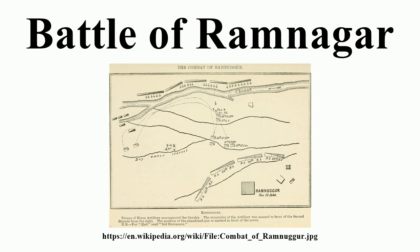Order of Battle — British regiments: 3rd King's Own Light Dragoons, 9th Queen's Royal Light Dragoons, 14th The King's Light Dragoons, 24th Foot, 29th Foot, 61st Foot. British Indian Army regiments: 1st Bengal Light Cavalry, 5th Bengal Light Cavalry, 6th Bengal Light Cavalry, 9th Bengal Light Cavalry, 2nd European Light Infantry, 6th Bengal Native Infantry, 15th Bengal Native Infantry, 20th Bengal Native Infantry, 25th Bengal Native Infantry, 30th Bengal Native Infantry, 31st Bengal Native Infantry, 36th Bengal Native Infantry, 45th Bengal Native Infantry, 56th Bengal Native Infantry, 69th Bengal Native Infantry, 70th Bengal Native Infantry.